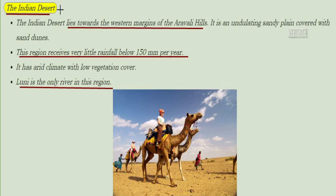The Indian Desert lies towards the western margins of the Aravalli Hills. It is an undulating sandy plain covered with sand dunes. This region receives very little rainfall — below 150 mm per year. It has an arid climate with low vegetation cover, and the Luni is the only river in this region.